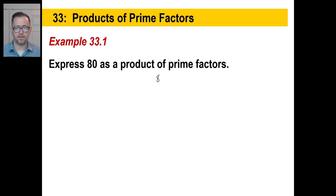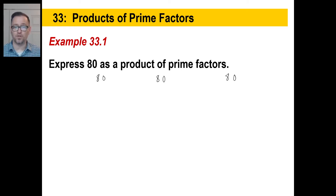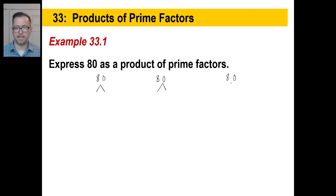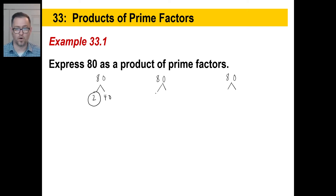We'll take 80, and you can do this any way you want — I'm going to show it several ways to demonstrate it doesn't matter how you do it as long as you do it right. Since 80 is an even number, it's two times 40. You're going to circle and hold on to the prime factors. Somebody else might say 80 is 8 times 10, and you wouldn't circle either of those because neither one is a prime factor.